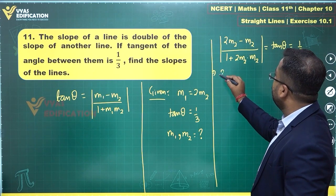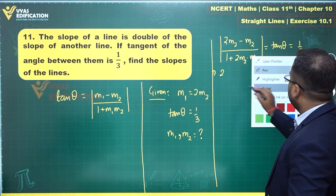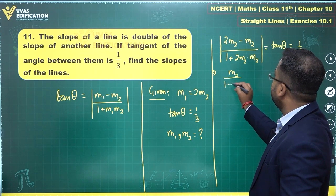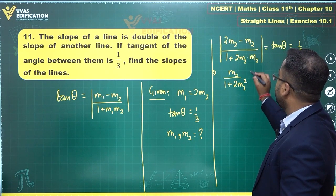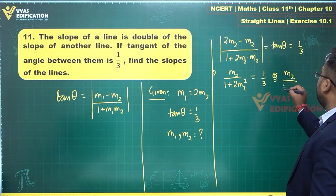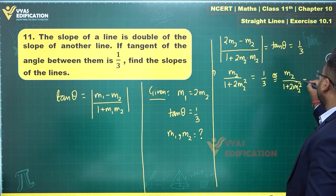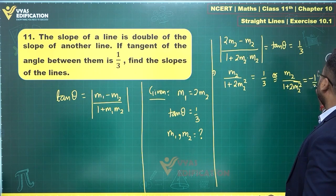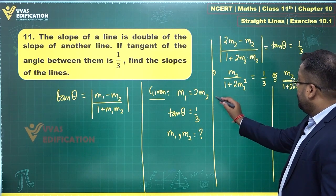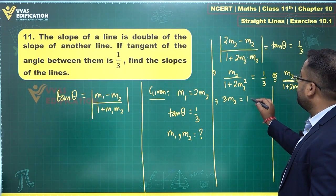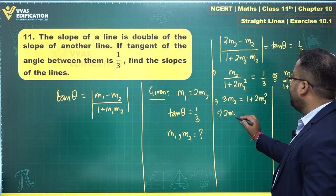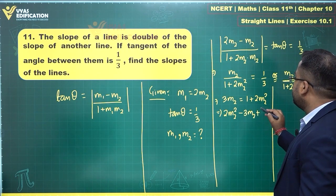If you remove the modulus, what you get is plus or minus 1 by 3 over there. So I'll solve 2M2. This becomes M2 upon 1 plus 2M2 square is equal to 1 by 3 or the same expression M2 upon 1 plus 2M2 square is equal to minus 1 by 3.